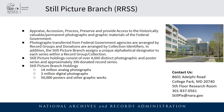At the Still Picture Branch we do a variety of functions to support the overall mission of the National Archives — primarily we appraise, accession, process, preserve, and provide access to the permanent photographs and graphic materials of the federal government. The photographs we receive from various federal government agencies are arranged by record group number, and donations are arranged by alphabetical collection identifiers. The Still Picture Branch also assigns unique alphabetical designators to each series of records within those record groups and collections.